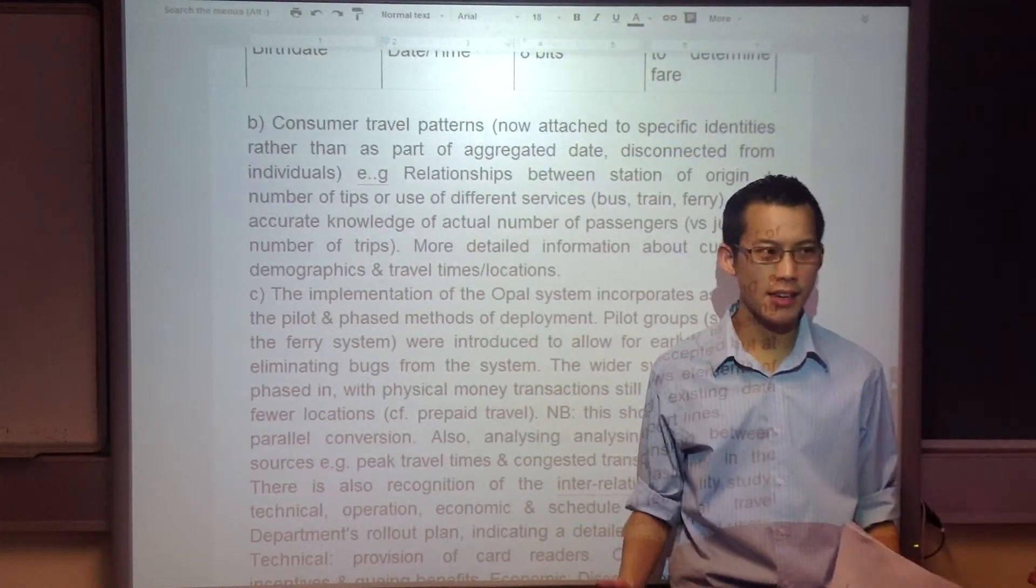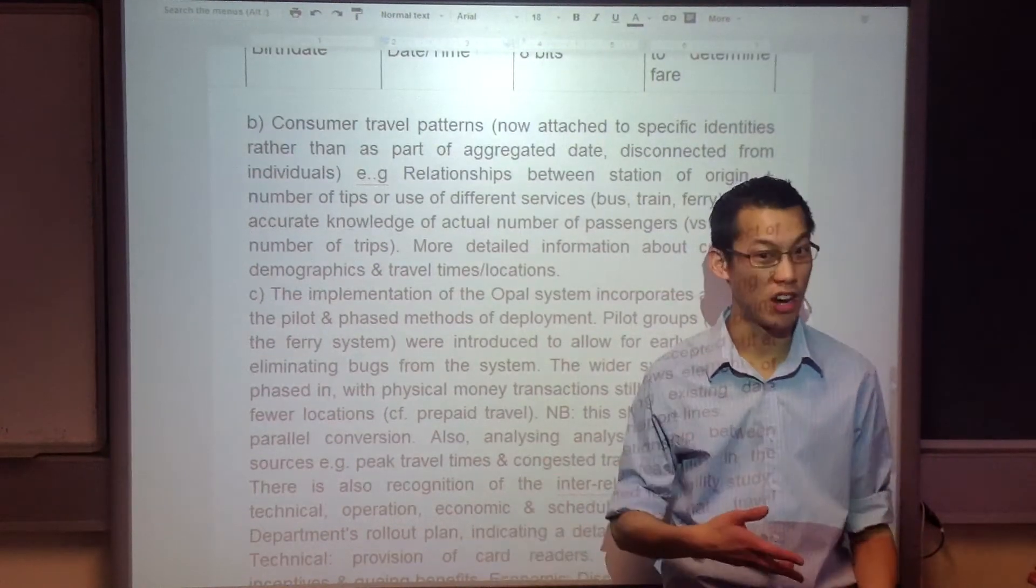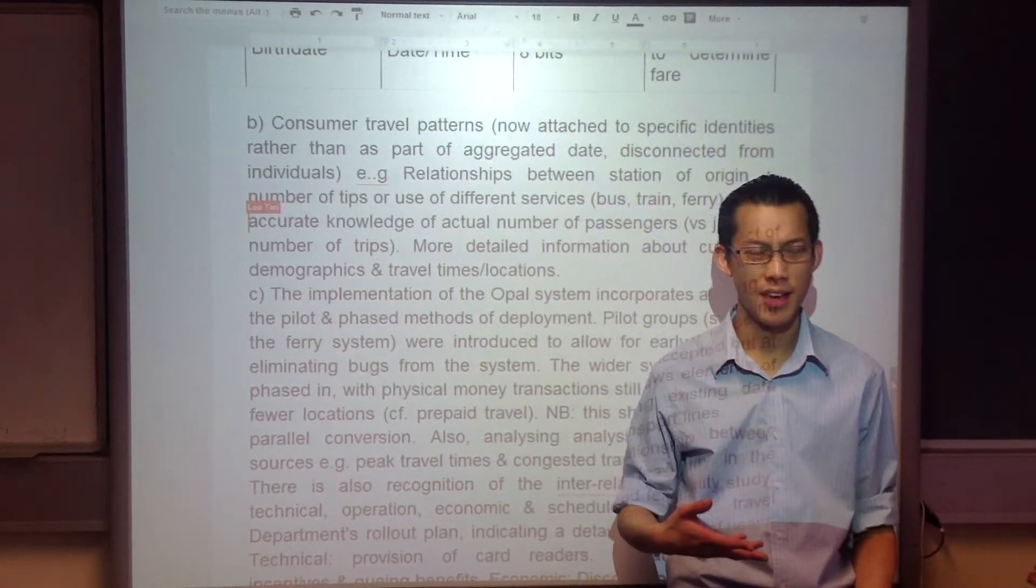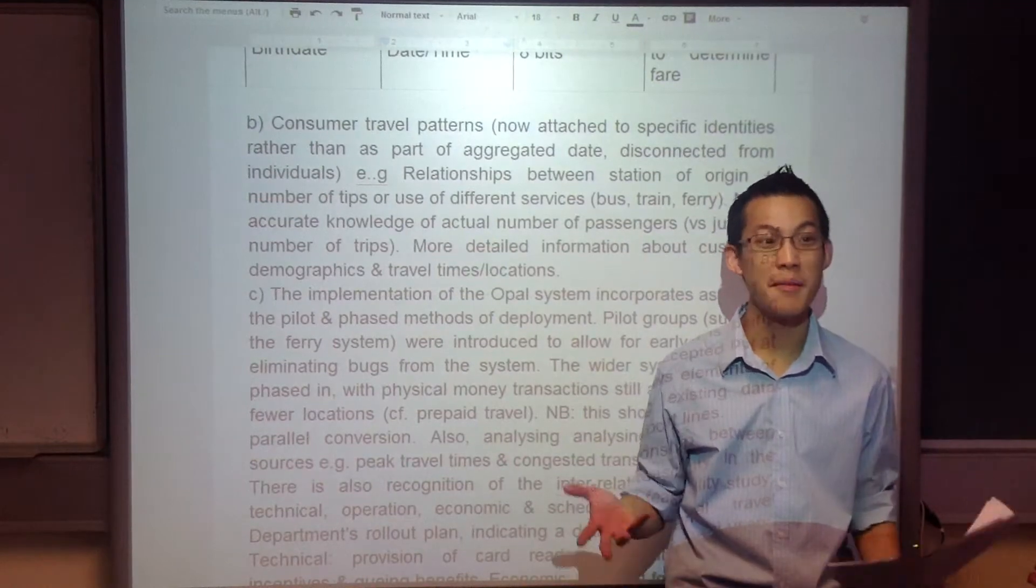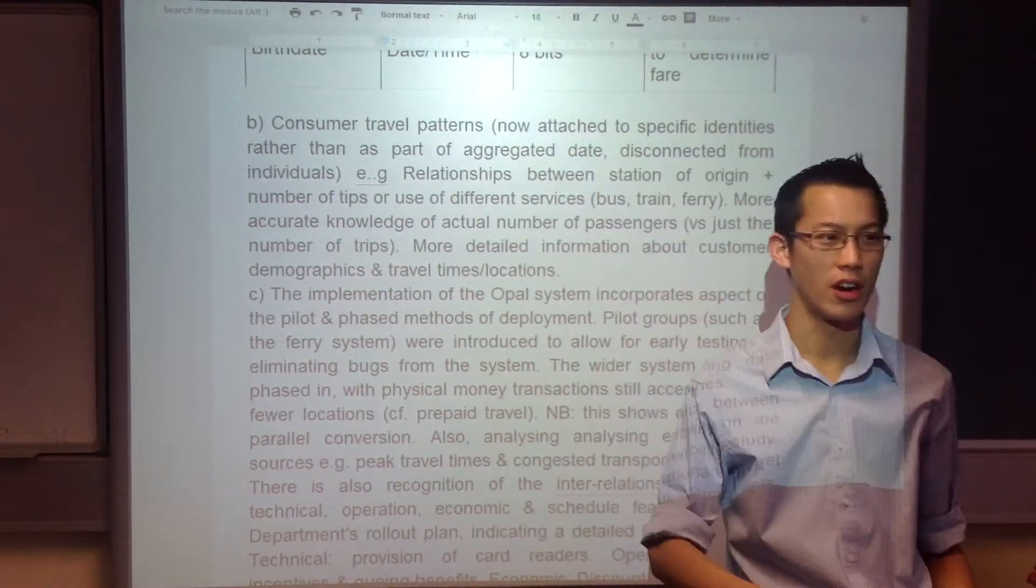I think the Department of Transport knows which stations are busy and which stations are not. Does that make sense? In fact, I think more or less any random bystander knows which stations are busy and which ones are not.